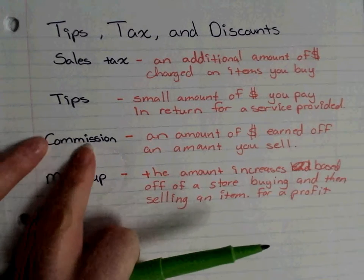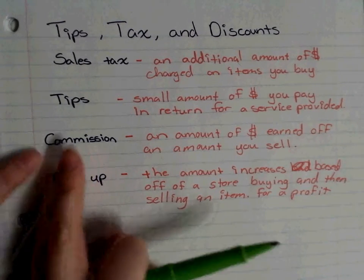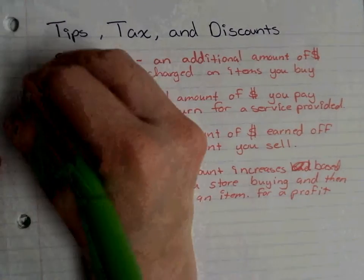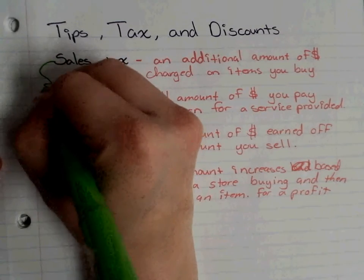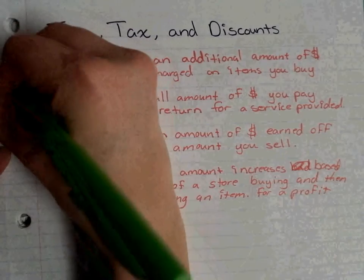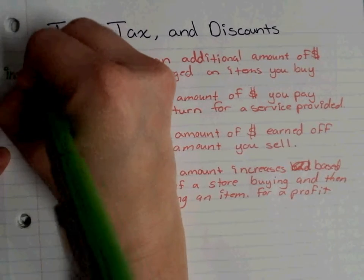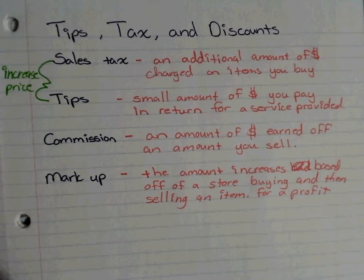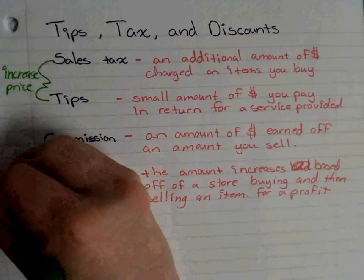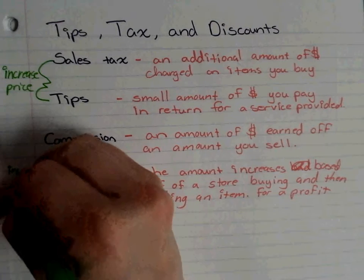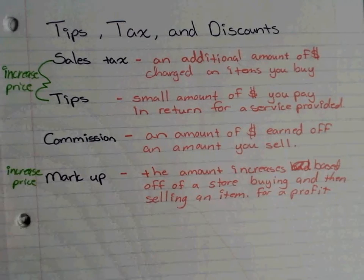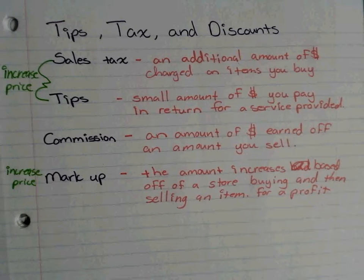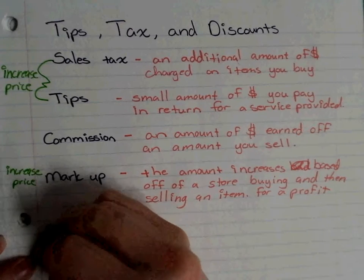Of these four things: sales tax and tips will increase the price, markup will also increase the price. Commission doesn't increase prices — it's just a percentage you're earning off of a price.